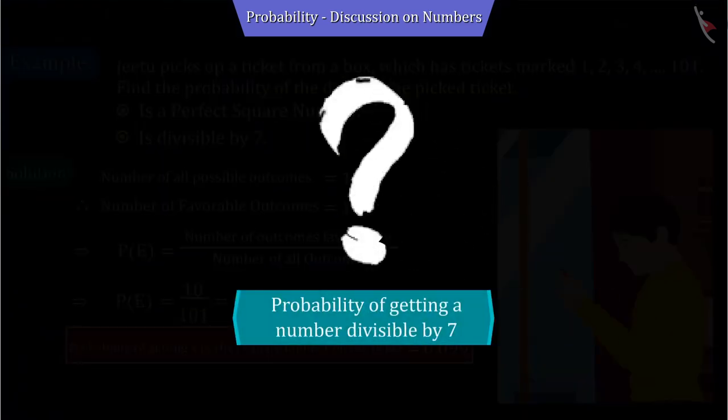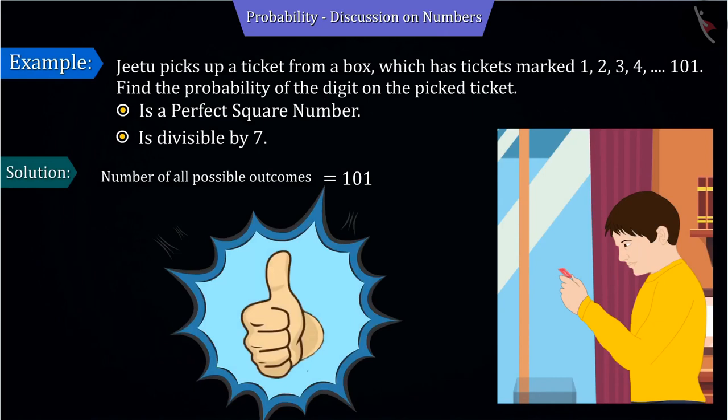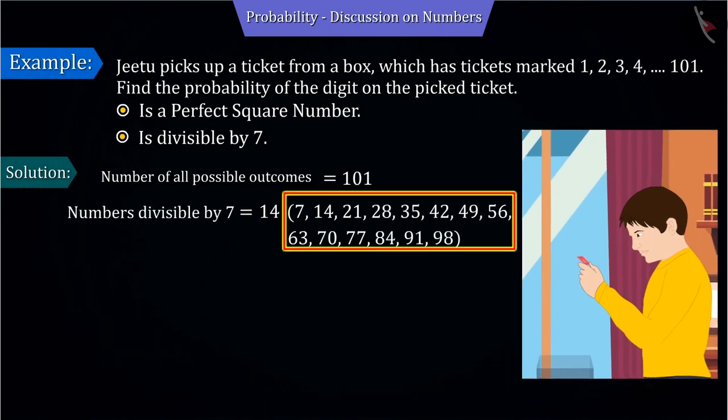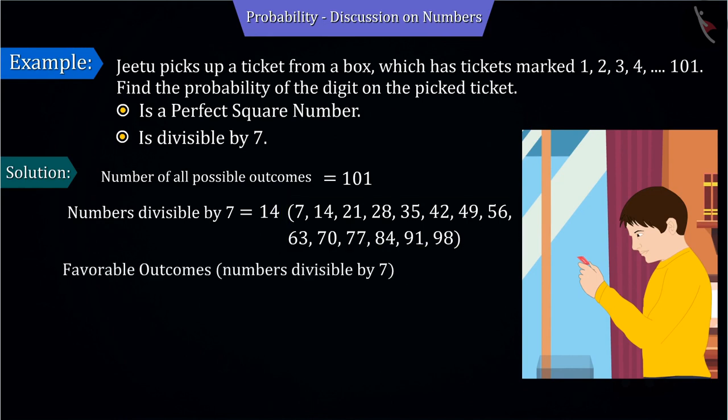Now, can you tell the probability of getting a number on the ticket which is divisible by 7? Correct answer. There are a total of 14 numbers in the given numbers which are divisible by 7. That is, the number of results favorable to the event is 14.